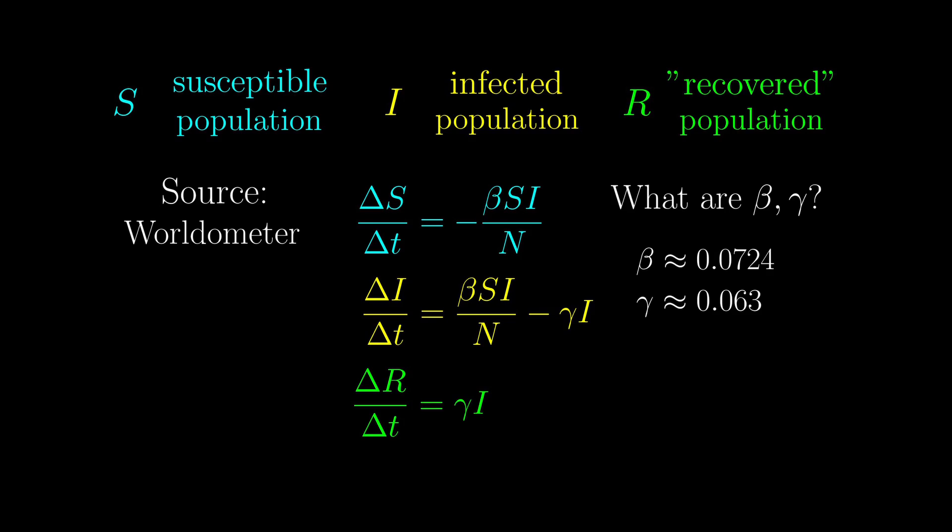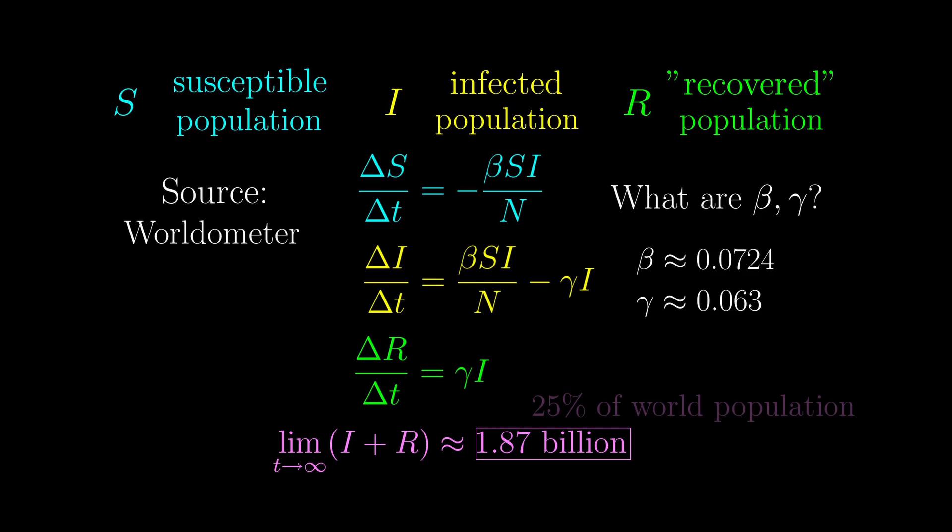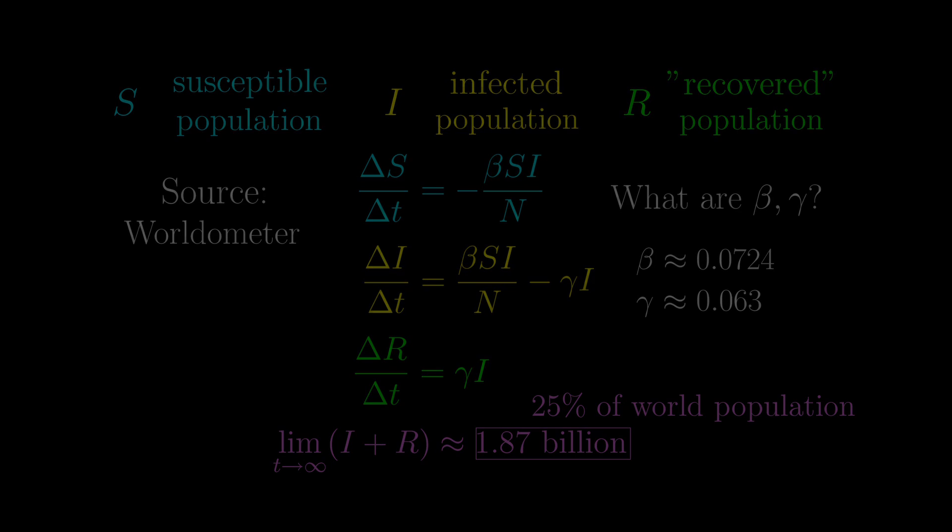Based on these values, assuming that they don't change over the course of the epidemic, we will get the figure I presented in the beginning of this video, i.e. the total number of cases, combining both currently or previously infected, will reach a plateau of around 1.87 billion. Now this figure is very horrifying to say the least, because that amounts to a quarter of the entire world population.